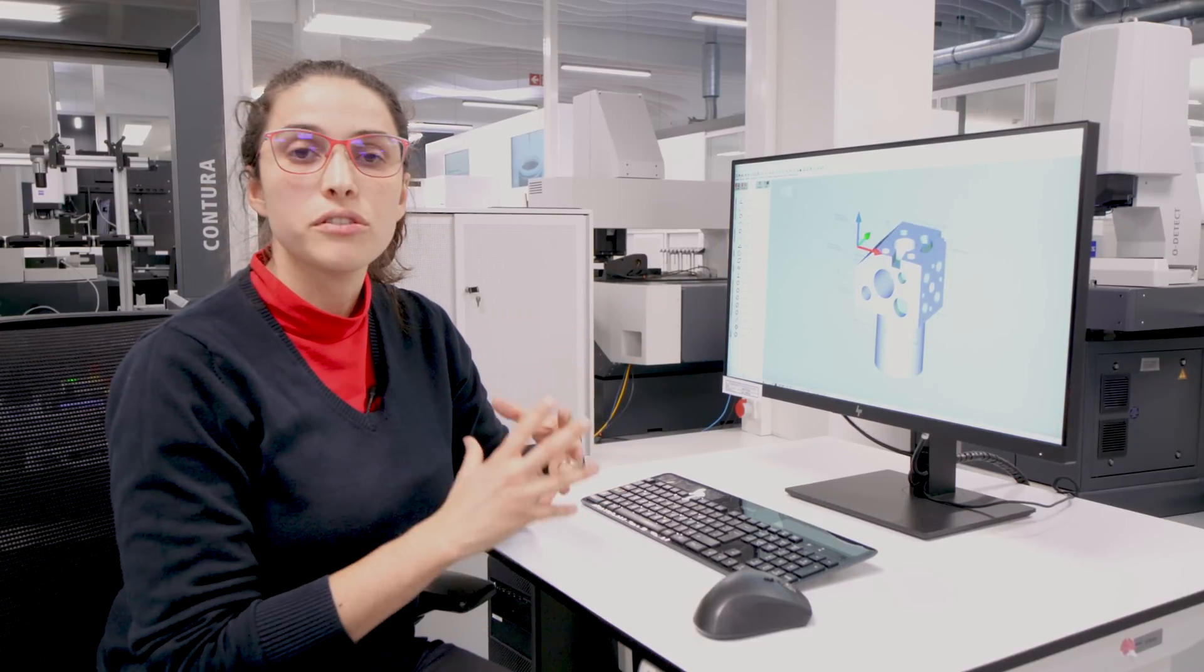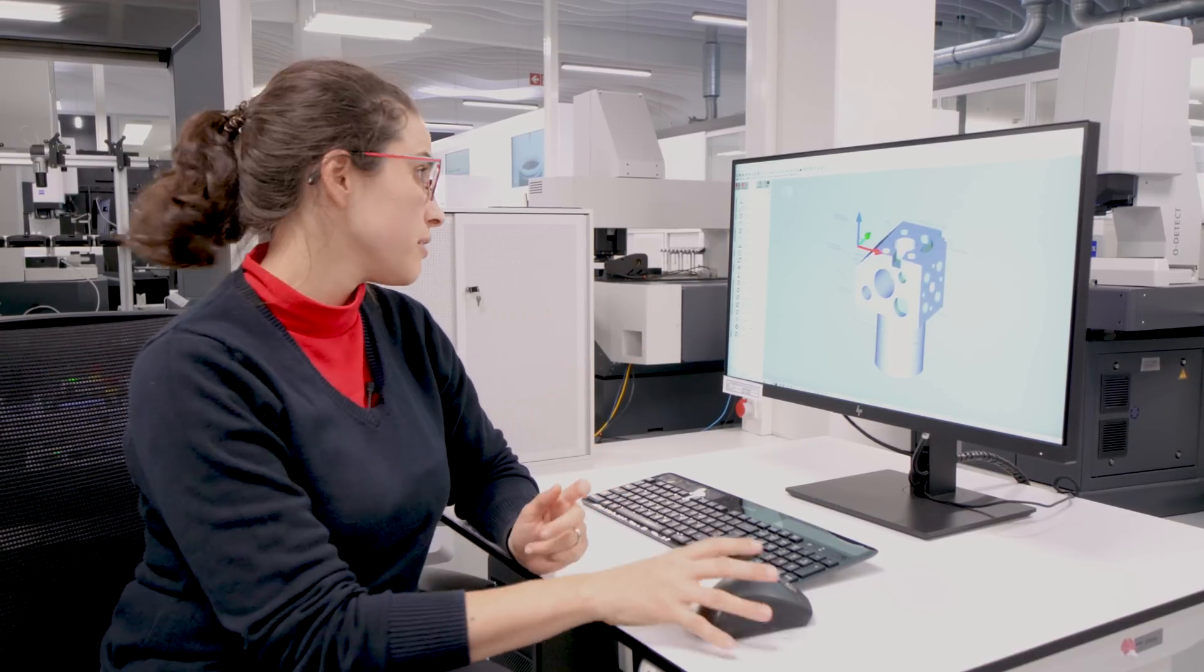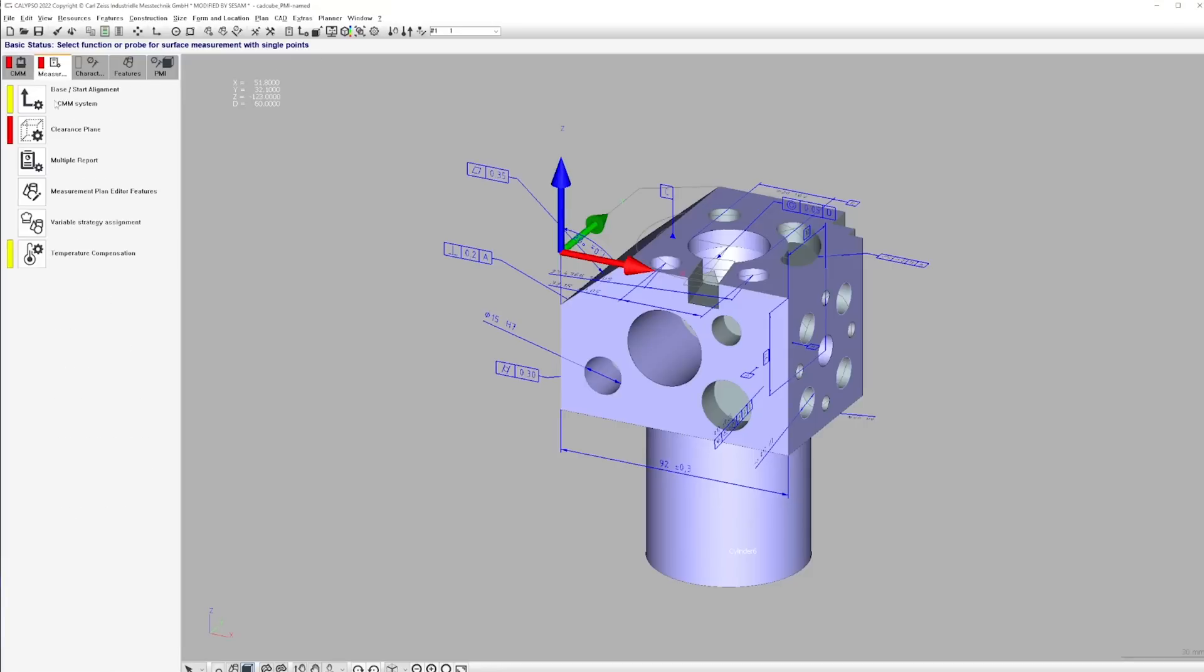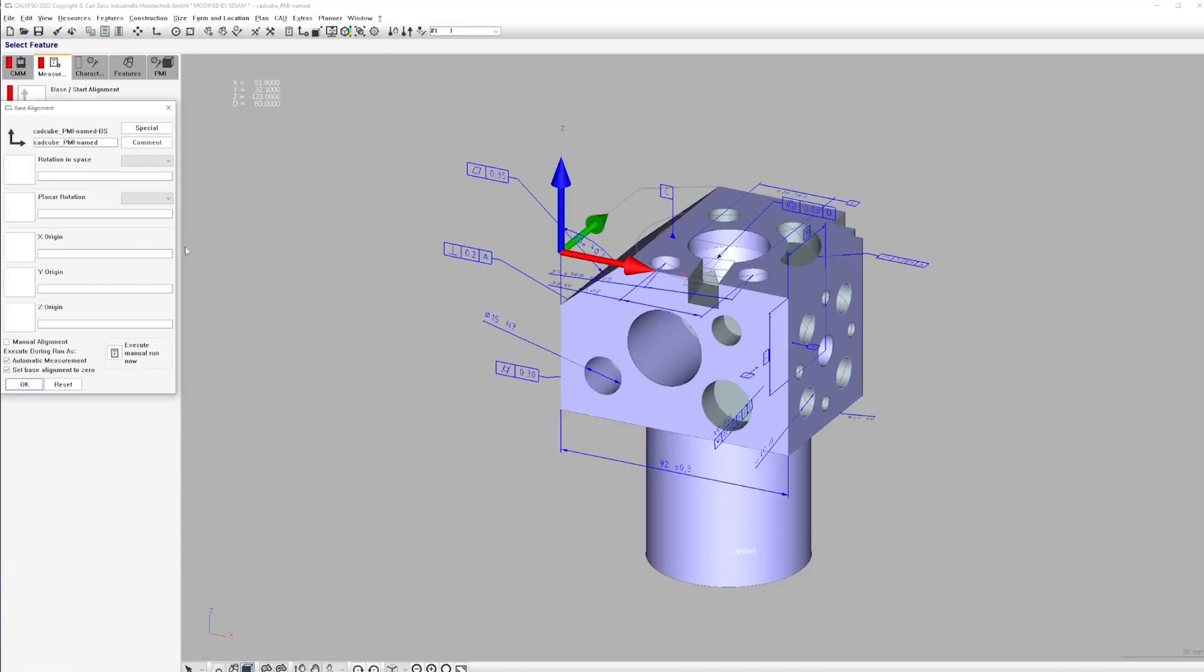What we need to do now is to create the base alignment for the measurement. As usual, we come here into the base alignment and select the features accordingly.